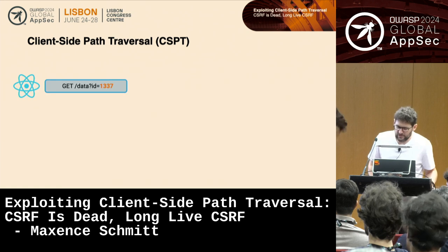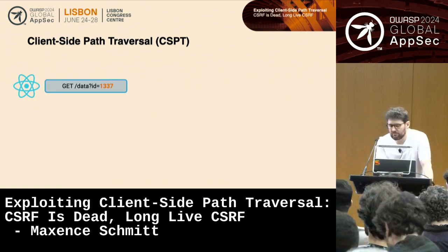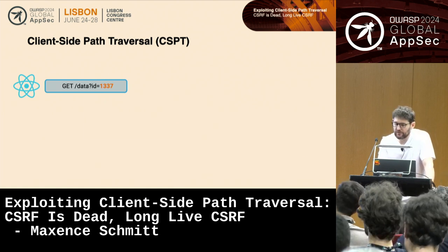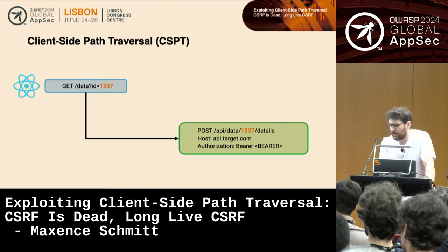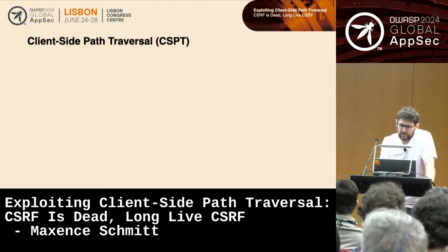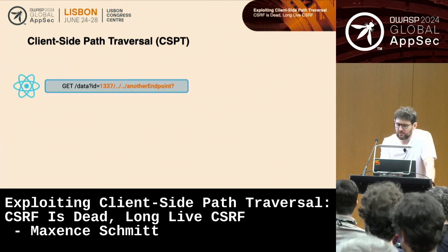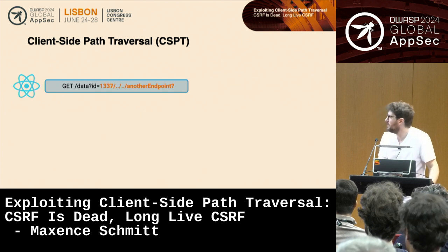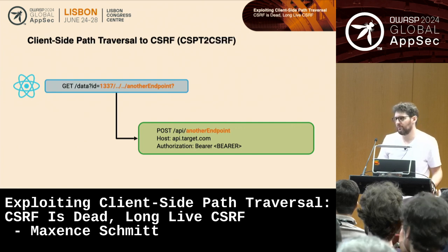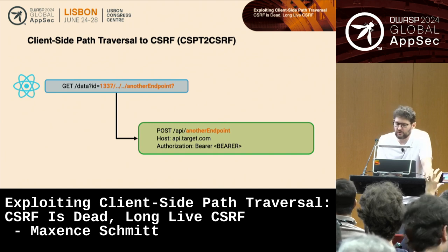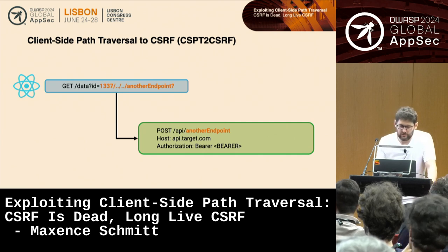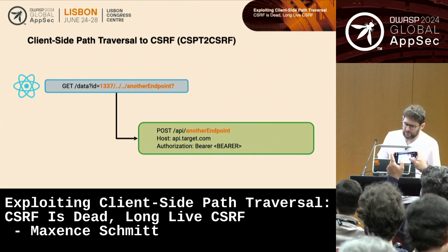Consider a web page accepting a query parameter in a React front end. The front end reads the query ID and uses it in a path parameter in a POST request to an API. What if we are able to do a path traversal inside this request value? The path will be normalized by the backend and we'll be able to call another endpoint — effectively rerouting a request. This can be used to perform CSRF. For convenience I'll call this CSPT-to-CSRF.